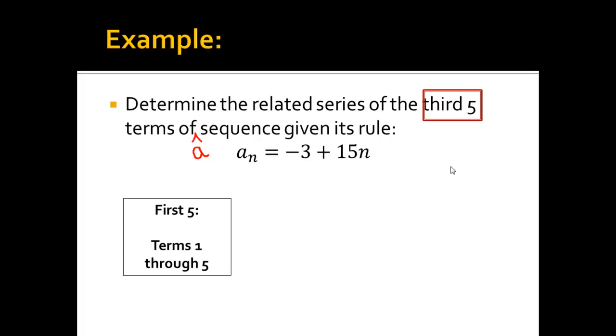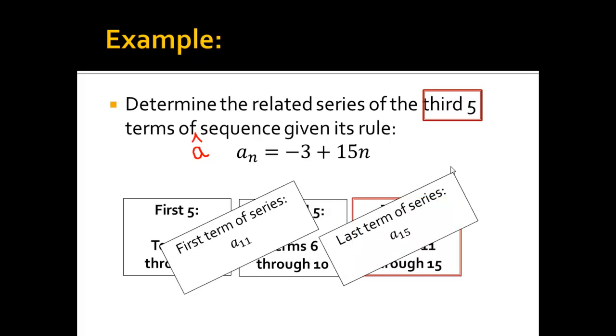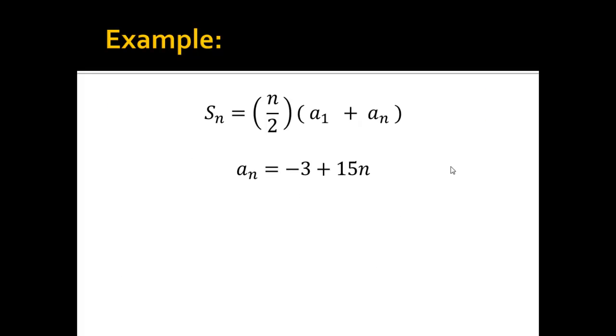Okay, so the first five is the first through fifth term, obviously. Second fifth would be, well, second five would be six through ten. And the third five would be eleven through fifteen. So, I know the first term of the series is the eleventh, which is a little weird, but basically I'm starting at the eleventh. I'm adding up the twelfth, thirteenth, fourteenth, and fifteenth. So, that's the last term of the series.